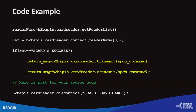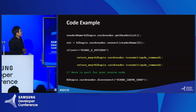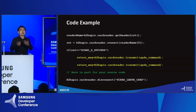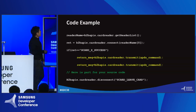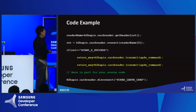Let's look at the example code. This is very simple JavaScript code. First, you need to get the name of the card reader and connect. When the connection completes successfully, send the APDU command to the card reader and to the smart card, then get the status of the smart card in the return message. You can fill out your code for your services and then disconnect with this parameter. It's very easy to use.